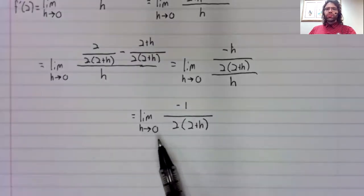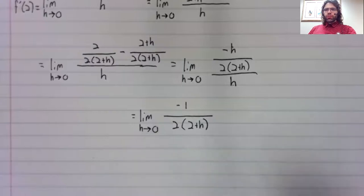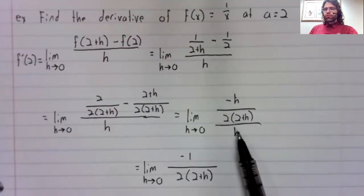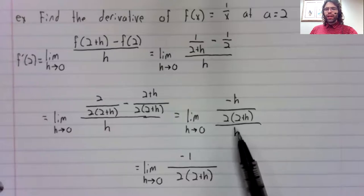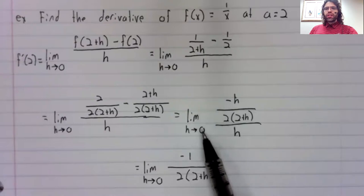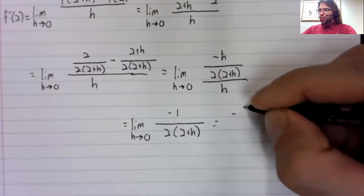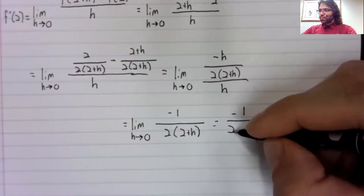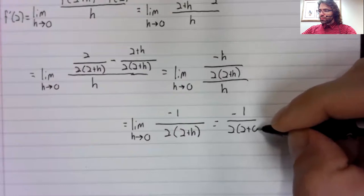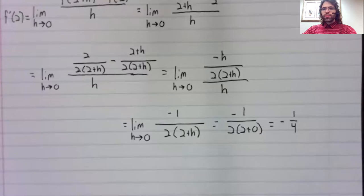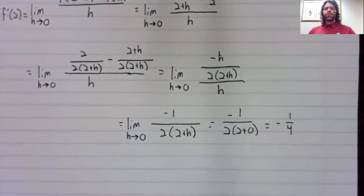And of course, the ultimate purpose we can see now of all this work was that we got rid of the h, which was giving us a division by zero error when we plug this zero in. Now that it's gone, we find a derivative of negative one fourth.